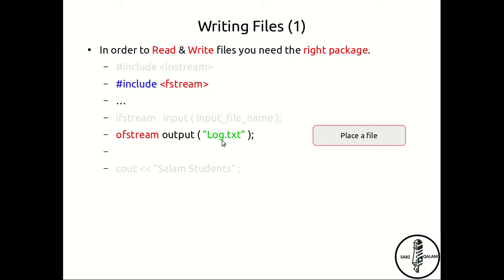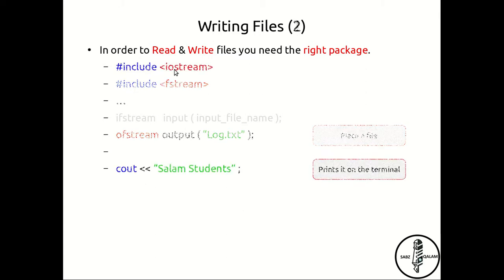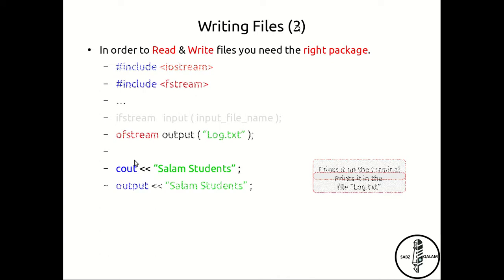Remember how you used cout to print 'salam students' on the monitor — because cout was an instance of the output stream. Now, because 'output' is an instance of the output file stream, you use it in exactly the same way. So writing 'output << "salam students"' is actually going to put 'salam students' within the log.txt file, and when you open it, the first statement you would see would be that line. It works in a very similar way to the input/output stream.